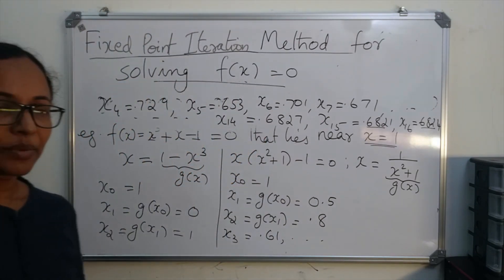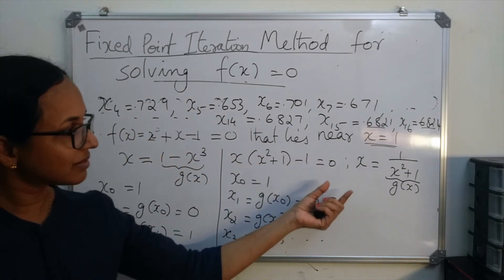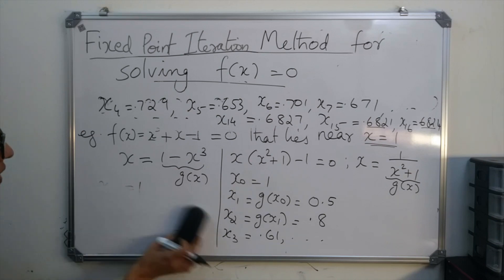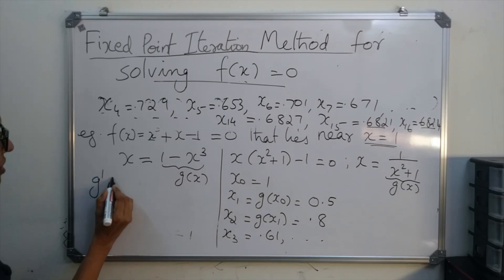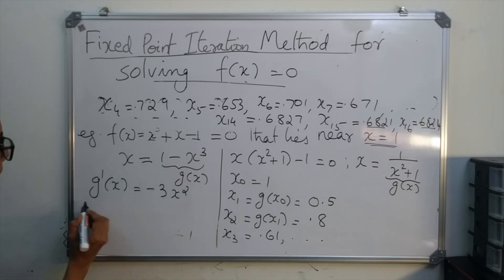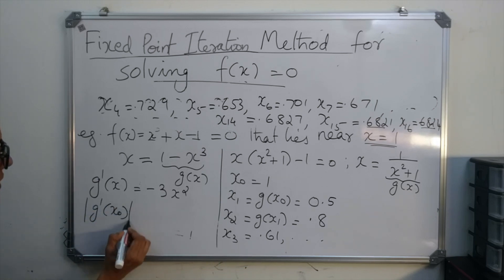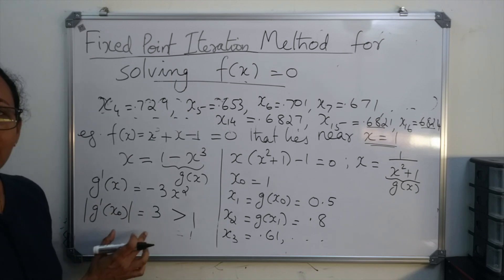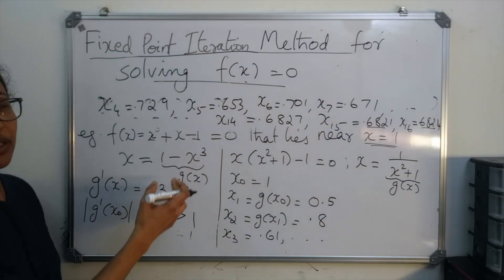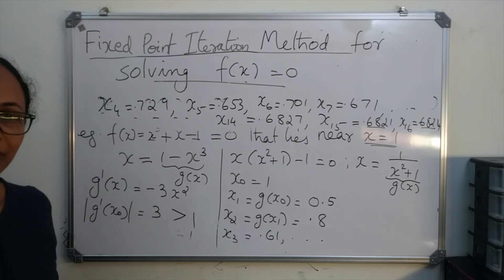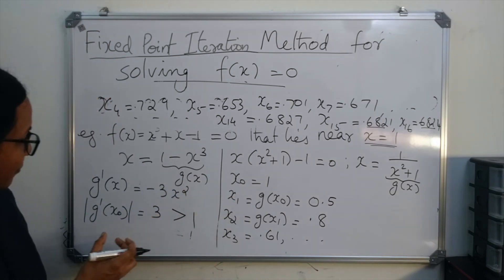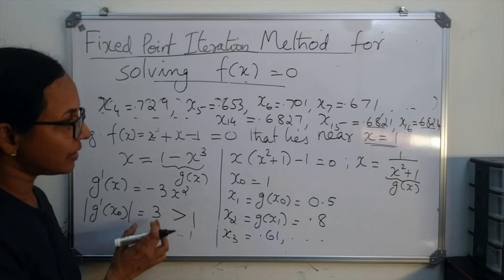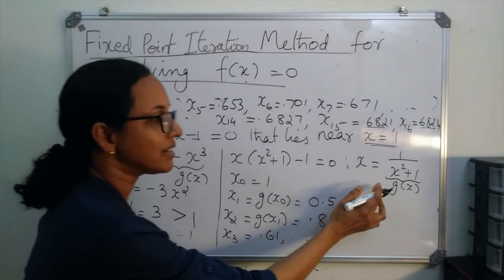Now we examine why the first g(x) did not converge. For g(x) = 1 − x³, g'(x) = −3x². The modulus of g'(x₀) at x₀ = 1 is |−3| = 3, which is greater than 1. If |g'(x₀)| > 1, the fixed point iteration method will not converge. So after choosing a g(x), you must check whether |g'(x₀)| is less than or greater than 1. If it is greater than 1, rearrange and find another g(x).